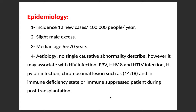Regarding the epidemiology of non-Hodgkin's lymphoma, the incidence is more than the Hodgkin type, reaching 12 new cases per 100,000 population per year, with a slight male excess, median age 65 to 70 years, and one peak. The etiology has no single causative abnormality described; however, it may be associated with HIV infection, Epstein-Barr virus, HHV type 8, HTLV infection, H. pylori, chromosomal lesions such as t(14;18), and immune deficiency states or immune-suppressed patients during post-transplantation.